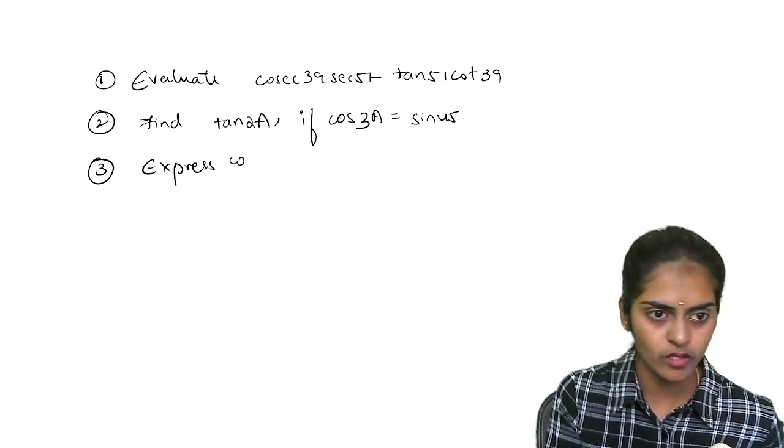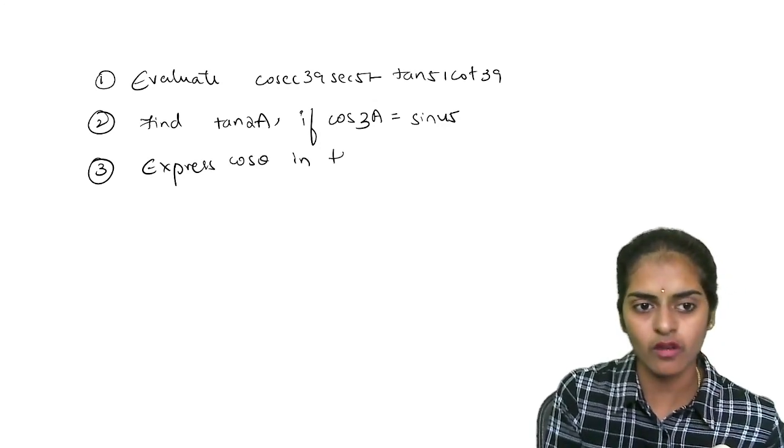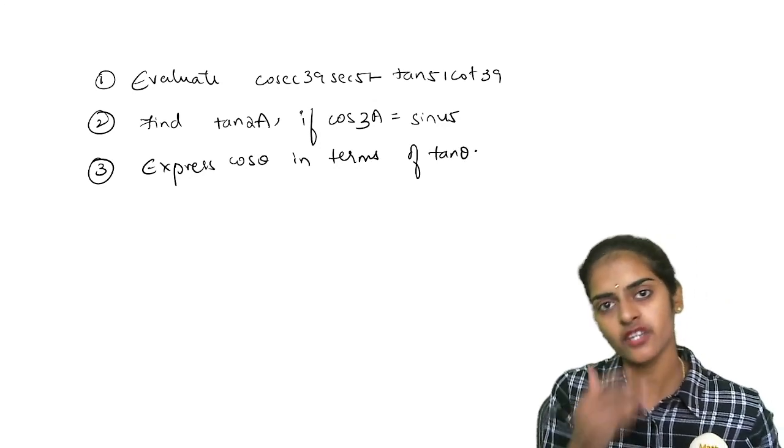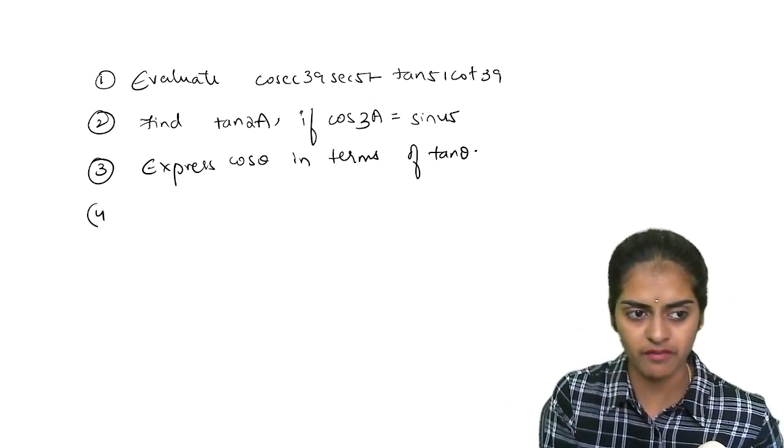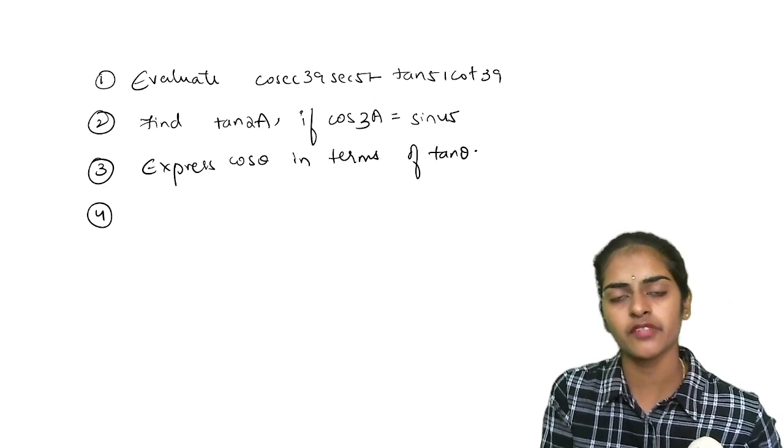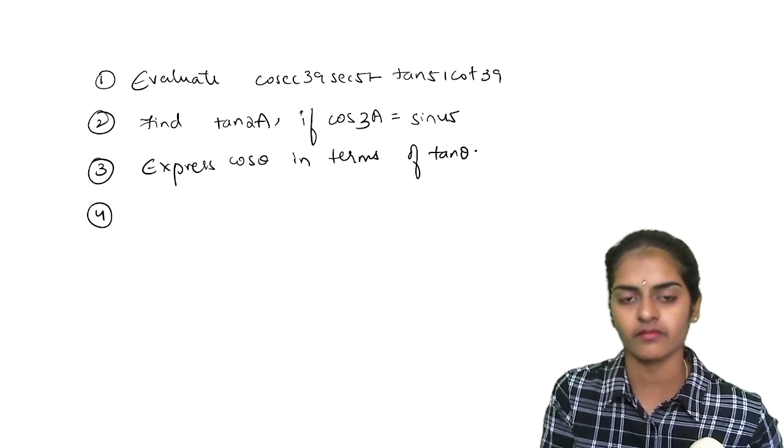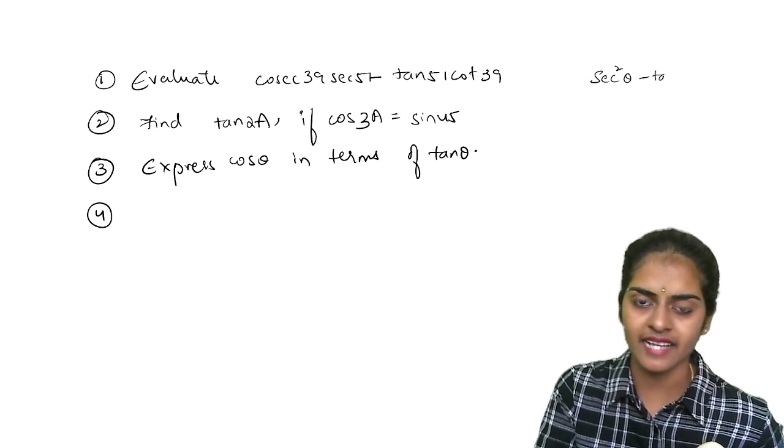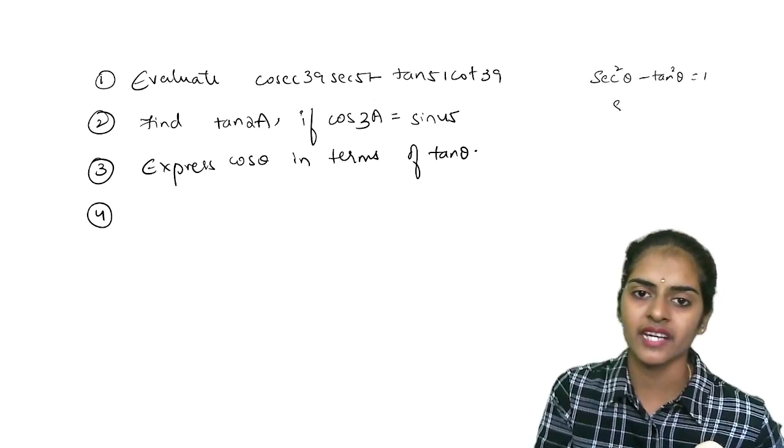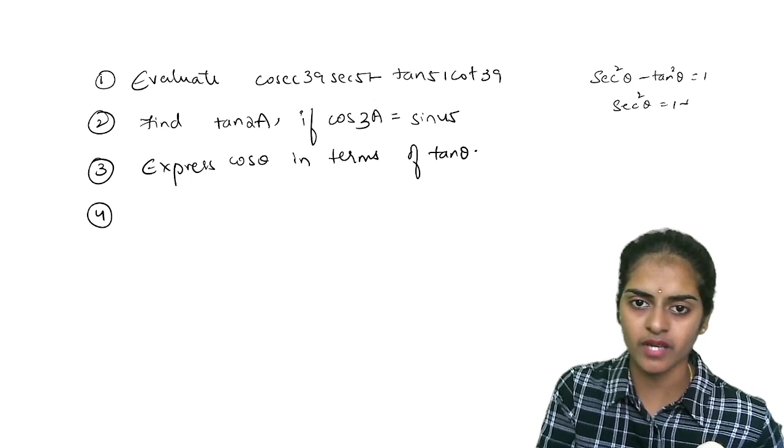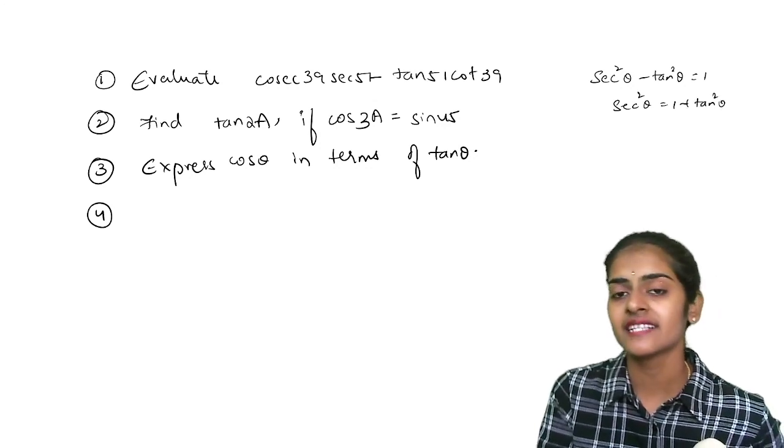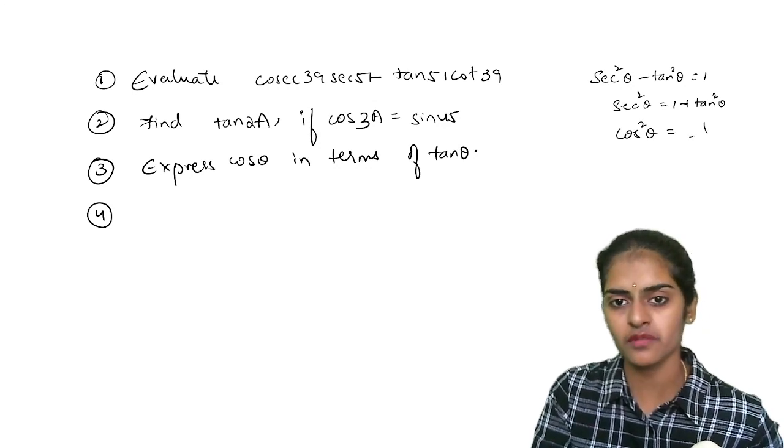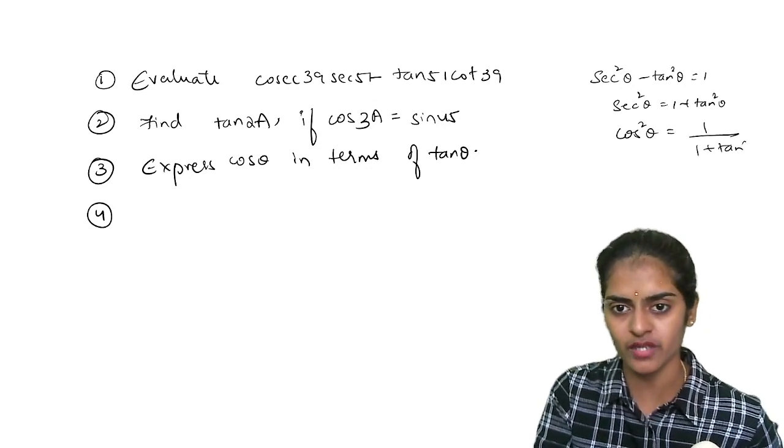Next, express cos theta in terms of tan theta. So one trigonometric ratio in terms of other trigonometric ratio you have to express. What is the relation between cos and tan? We know secant square theta minus tan square theta is 1. So I can write secant square theta is 1 plus tan square theta, and secant is reciprocal of cos.